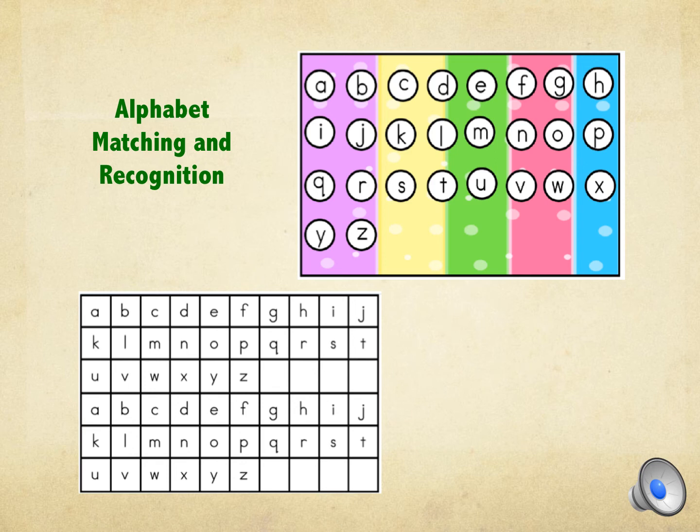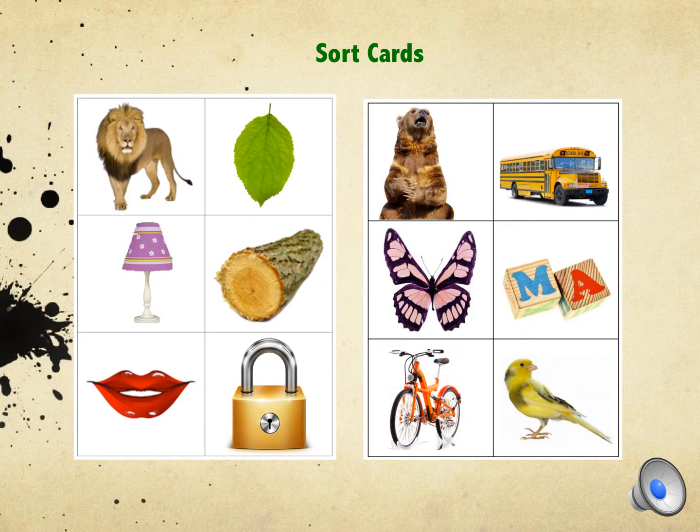In this game, the alphabet cards are cut and the students match the letter on the game board. If they know the letter names, they can identify them. The students would sort the cards accordingly if they begin with the letter L sound or the letter B sound.